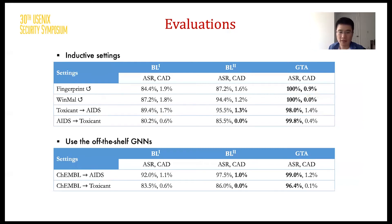Here are some of our evaluation results. Under inductive settings, we first consider attacking self-transfer learning within the same dataset, then consider attacking mutual transfer learning between different datasets within a similar domain. Later, we use a pre-trained model downloaded from a public repository and use GTA to inject the backdoor into it. Among all those settings, we can observe that GTA always achieves the highest success rate and also has relatively low clean accuracy drops.